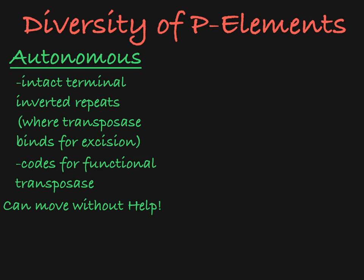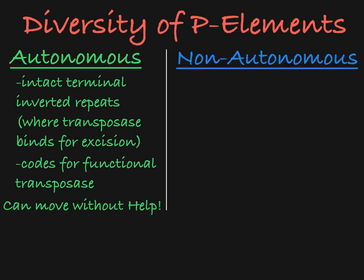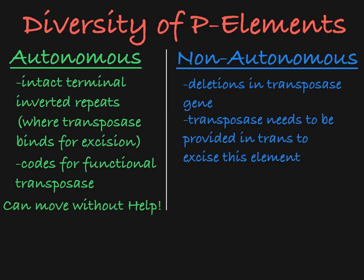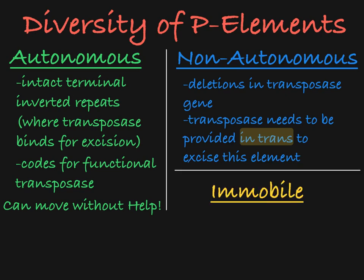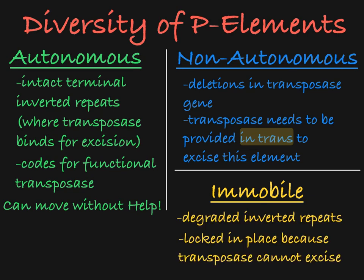In the wild, all kinds of variants of P elements can be found. Some contain deletions in the exons encoding transposase, preventing the expression of functional transposase protein. These P elements are called non-autonomous, as they require transposase produced from other autonomous P elements elsewhere in the genome to be able to transpose. Transposase produced from another element is said to be provided for the non-autonomous P element in trans. Other variants include P elements with degraded inverted terminal repeats; these P elements have become locked in their current genomic position, as they cannot be excised by transposase.